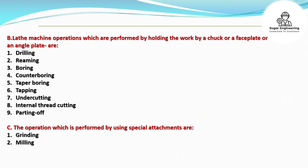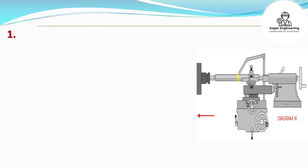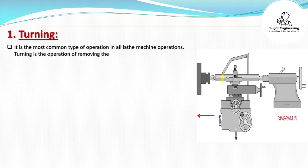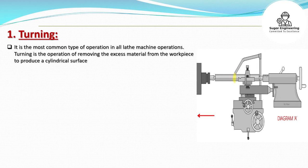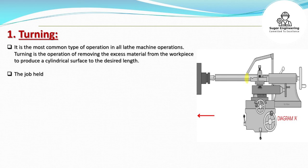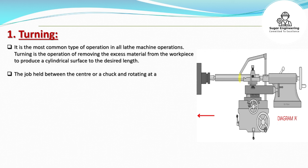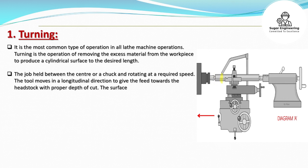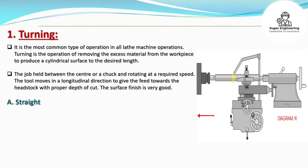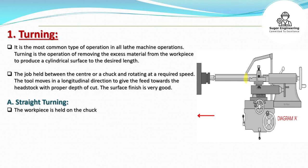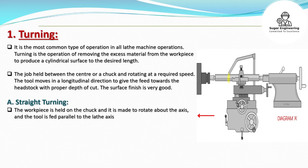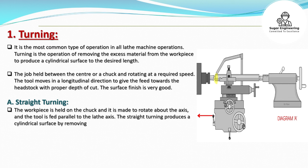Operations performed using special attachments include grinding and milling. Turning is the most common type of operation in all lathe machine operations. Turning is the operation of removing the excess material from the workpiece to produce a cylindrical surface to the desired length. The job is held between centers or a chuck and rotated at the required speed.